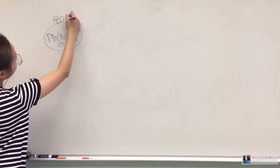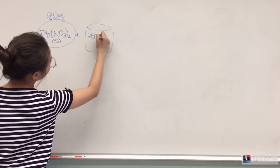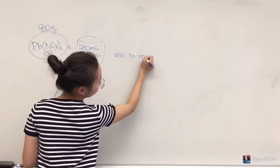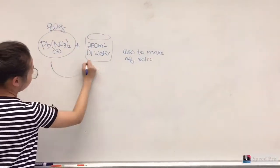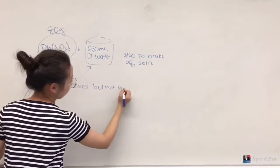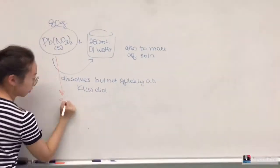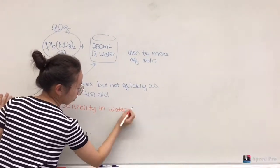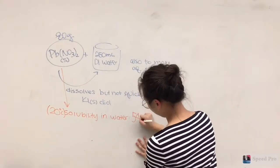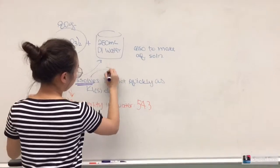An aqueous solution was also made of lead-2 nitrate, which is significantly less soluble than potassium iodide in water. Lead nitrate solubility in water is only 54.3 grams per 100 grams of water compared to potassium iodide's 144 to 100. The solubility of lead nitrate can be increased by increasing the temperature of the lead nitrate solution.